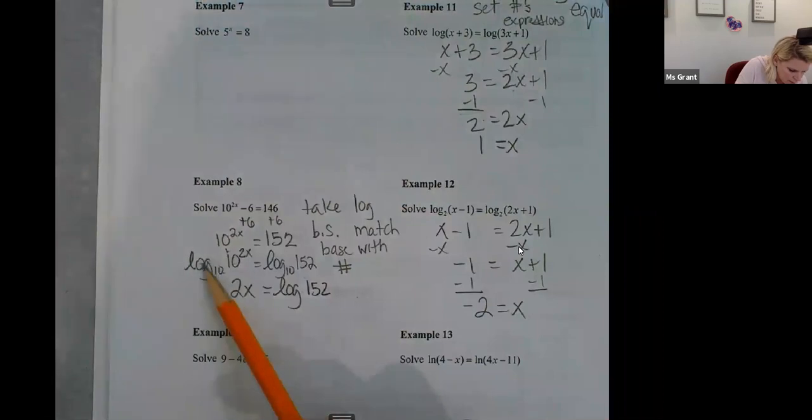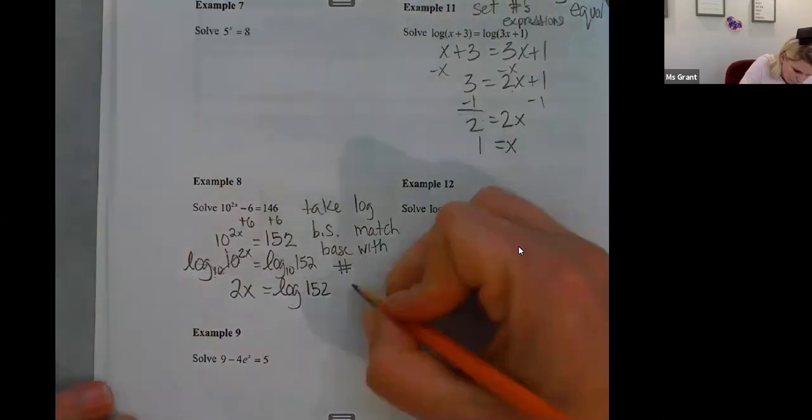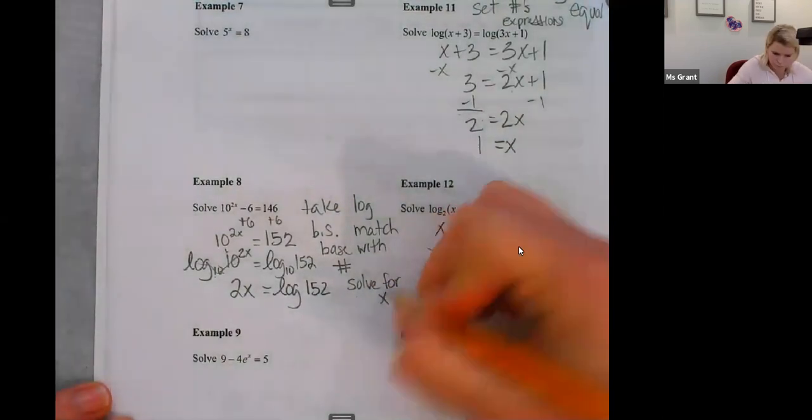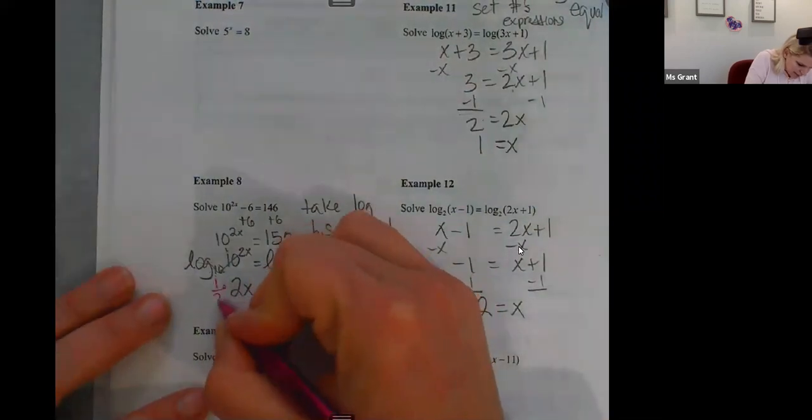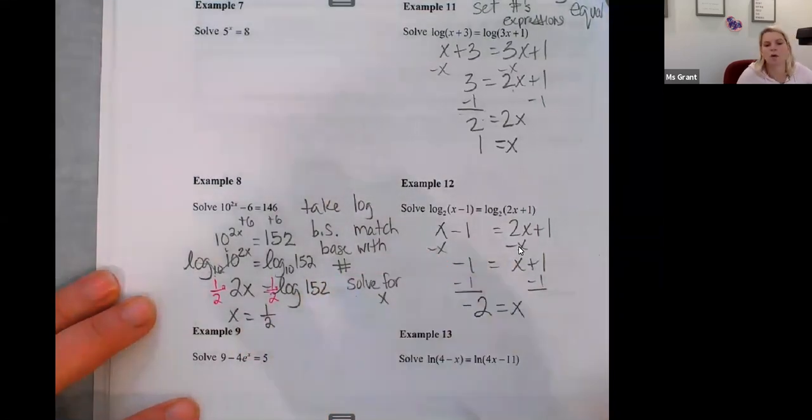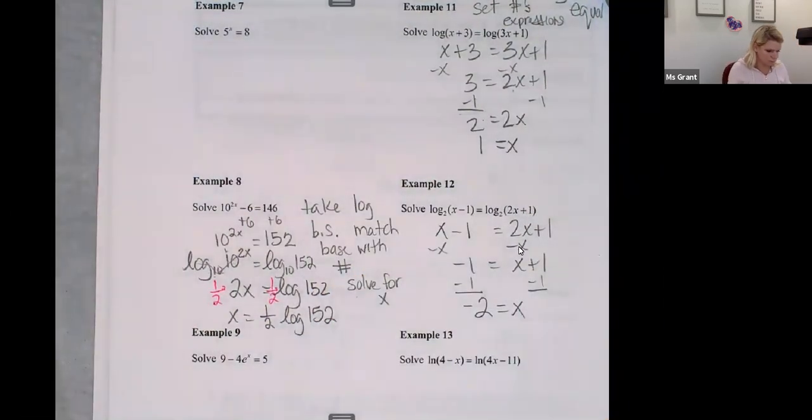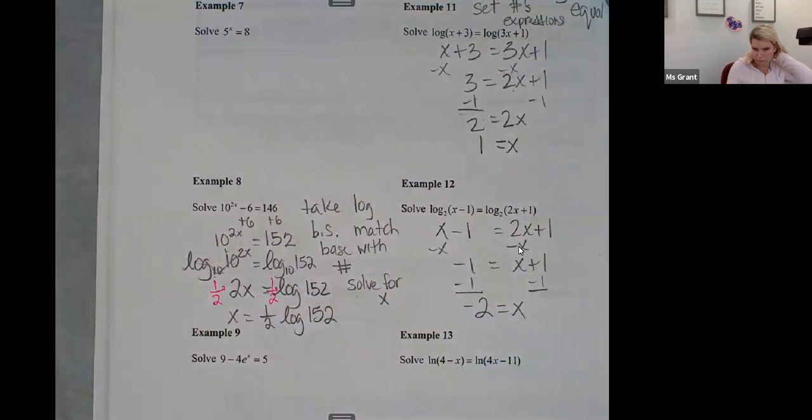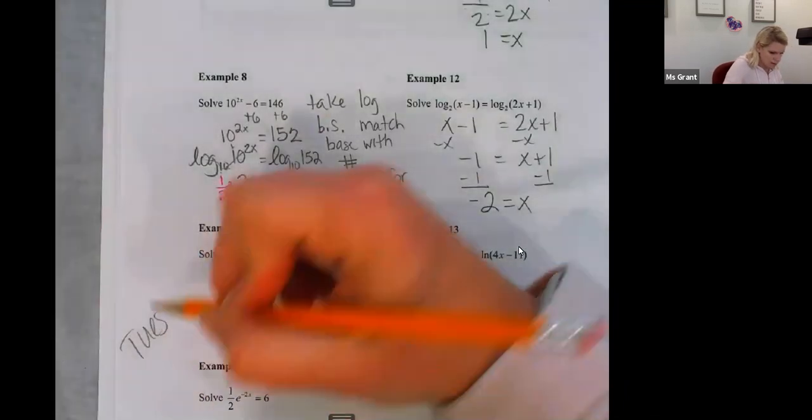You can only cancel the log when all is the same like that. Solve for x. Okay. Get rid of the 2. I'm not going to divide. Let's just multiply by 1 half. 1 half. X equals 1 half times log rhythm of 152. We're going to do 9, 10, 13, and 14 on Tuesday. Okay.